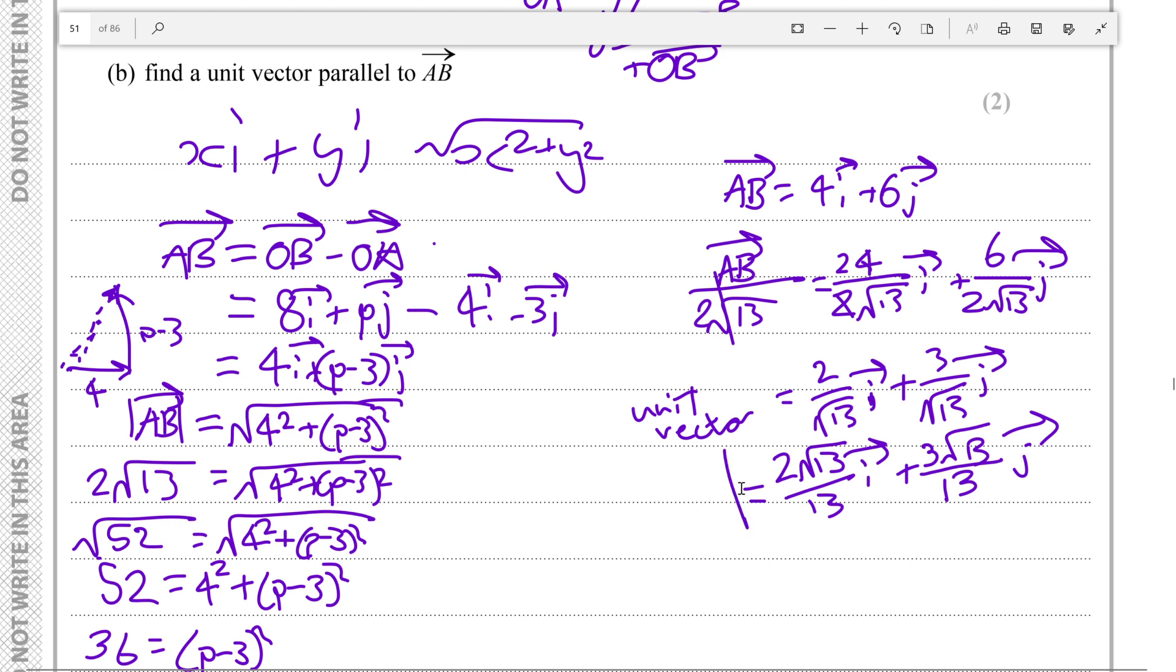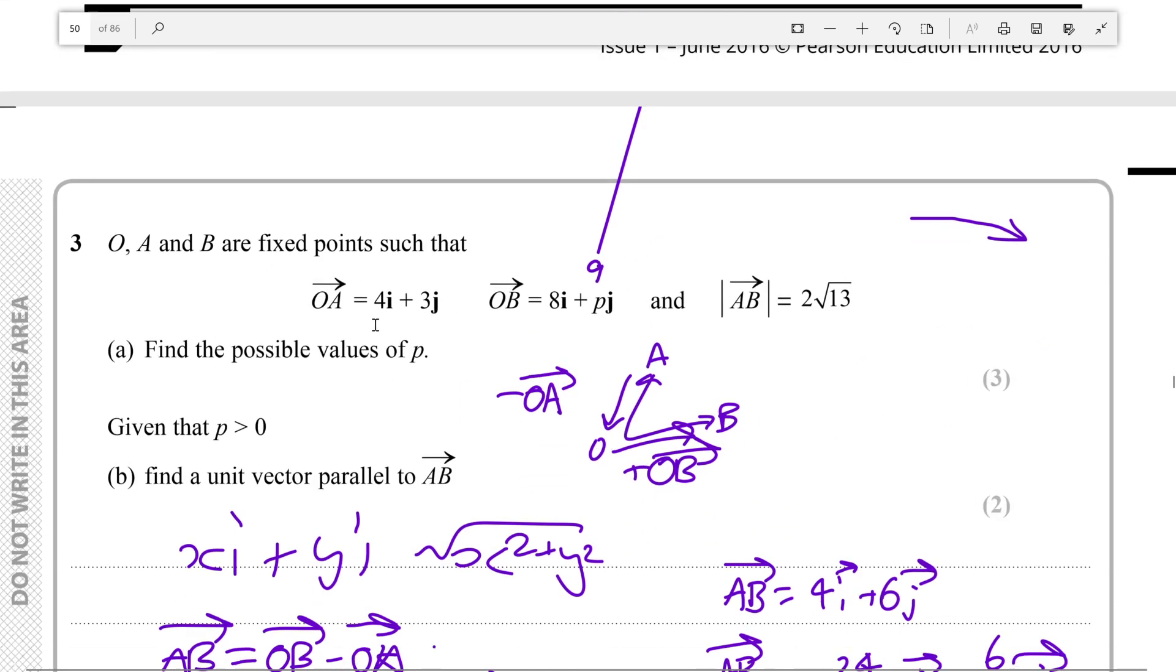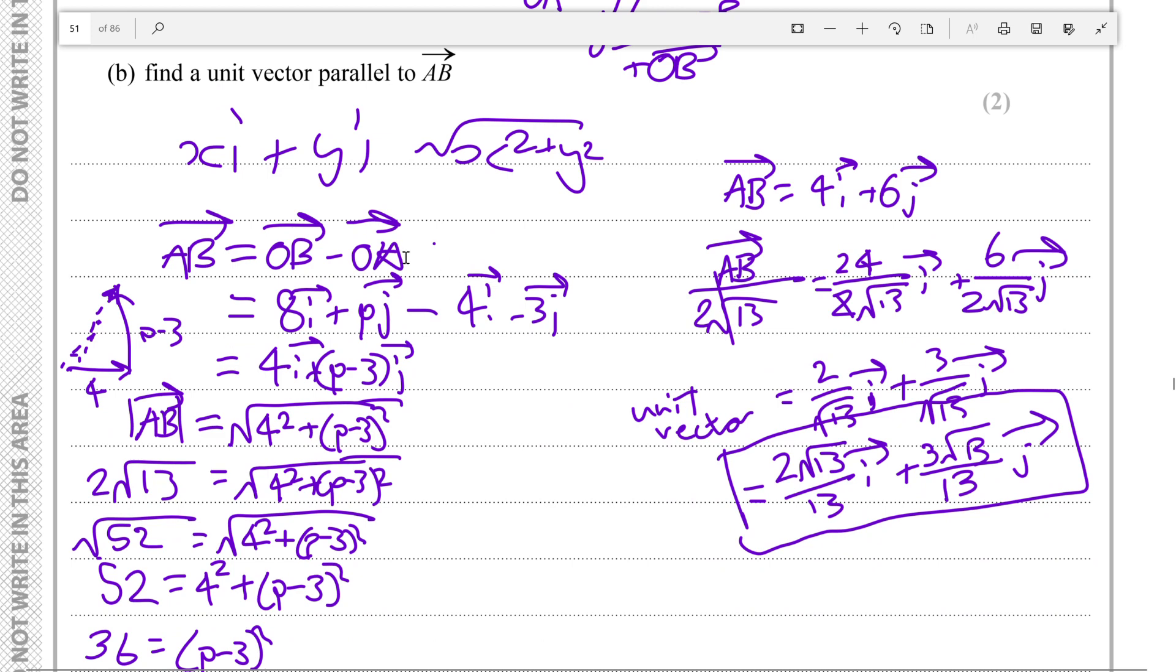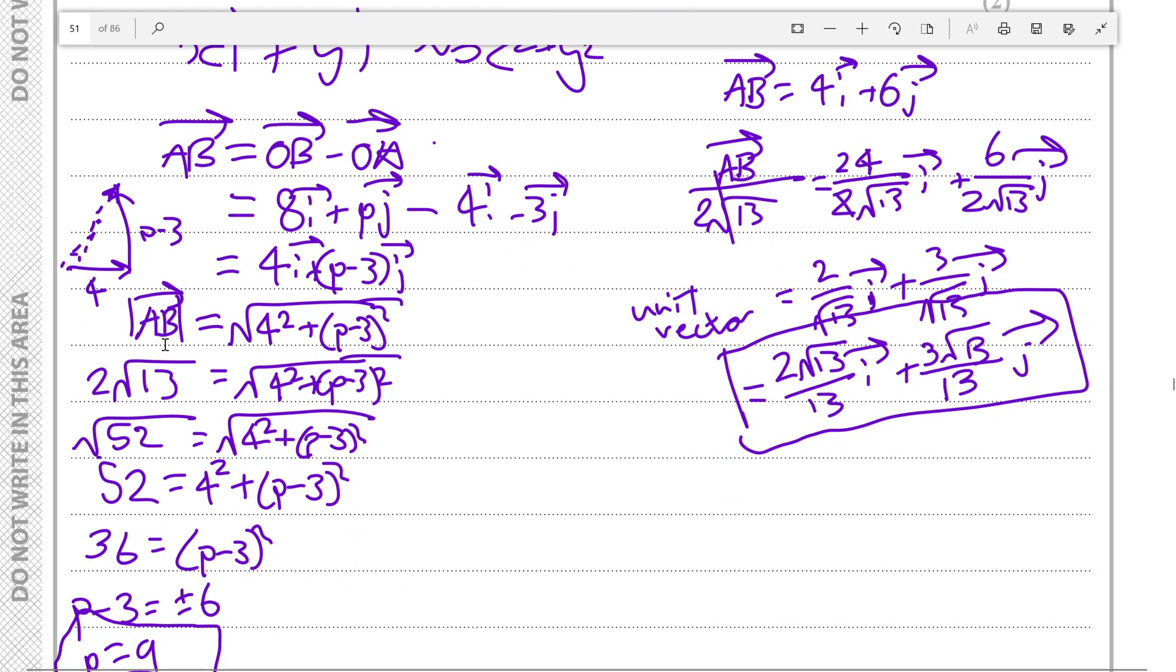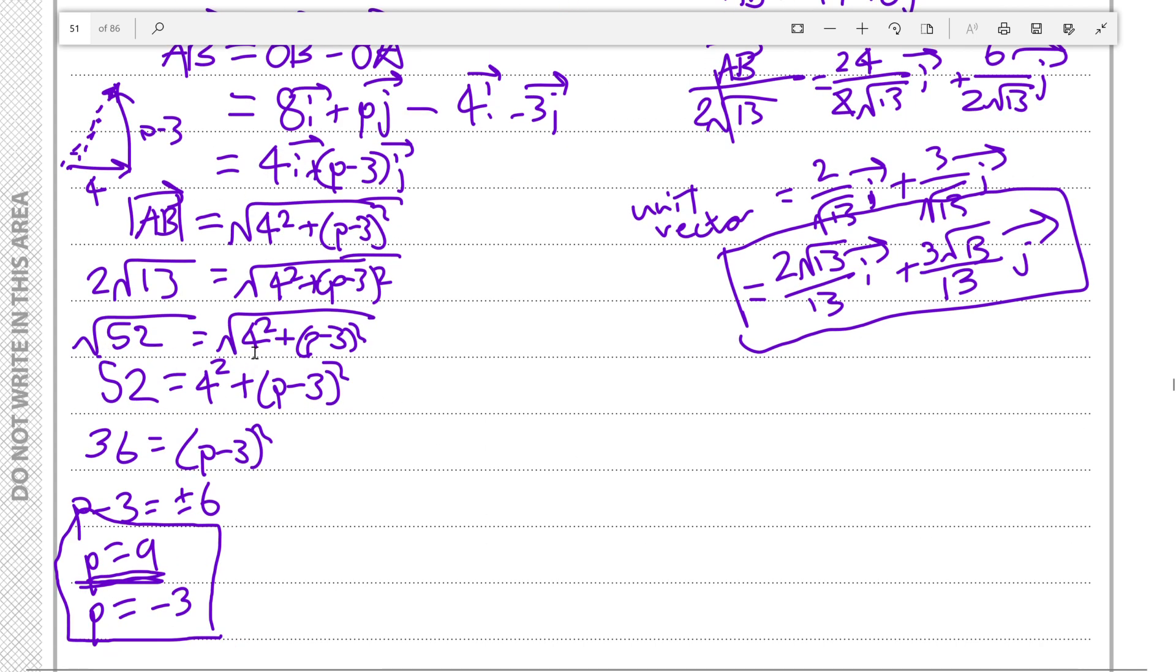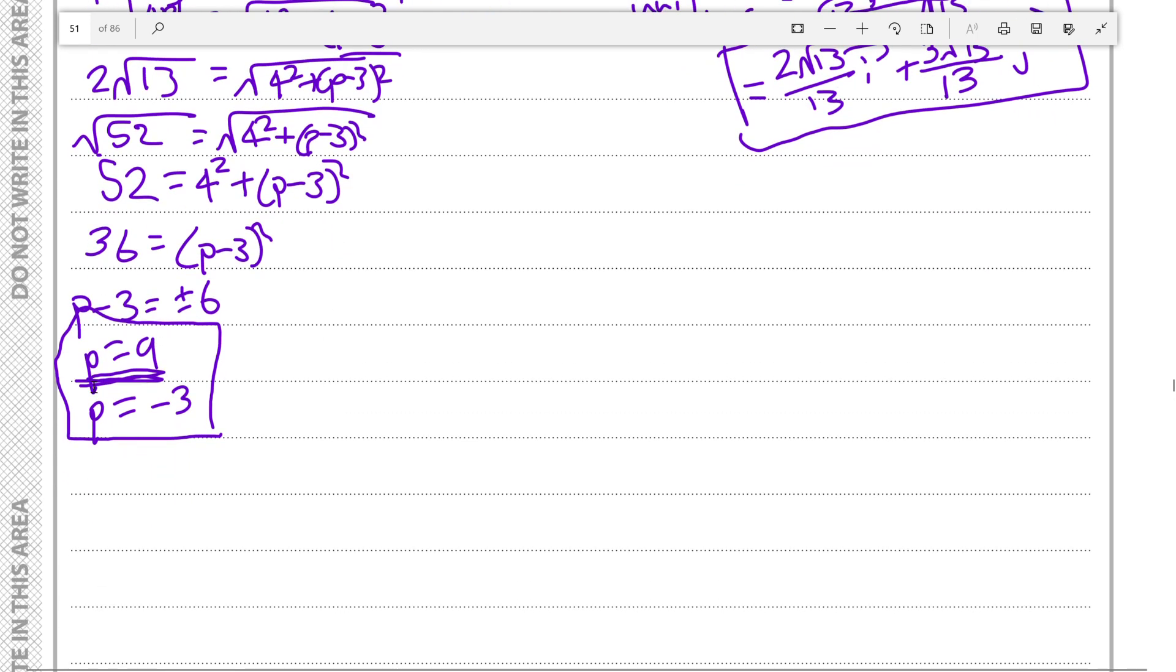And this is our final answer, this is the unit vector. So to recap, we look at these, we take OB minus OA to find the value of AB, and since the magnitude of AB is related to the i value and the j value, we use that to create this equation here that 2 root 13 is the root of 4 squared plus (p minus 3) squared. Root 52 is 4 squared plus (p minus 3) squared, and we solve this to get the two values of p, because remember when you square root it can be a positive or a negative. We found that p is 9 or p is minus 3.